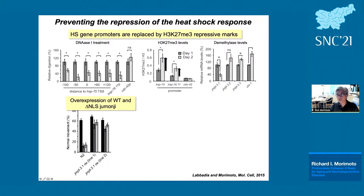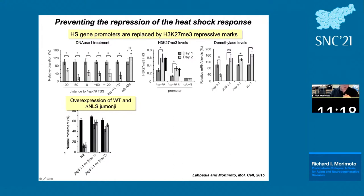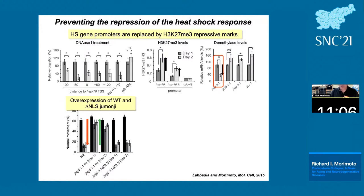John then asked: what happens if you overexpress the Jumanji demethylase? Overexpressing it by 50% has a dramatic protective effect on stress resilience across day one, day two, and day three. But when he mutated the demethylase to remove the nuclear localization signal, retaining it in the cytoplasm, there was no protection in two different lines — demonstrating the nuclear localization is essential. Wild-type animals show a dramatic decline in heat shock response from day one to day two, driving the loss of chaperones.